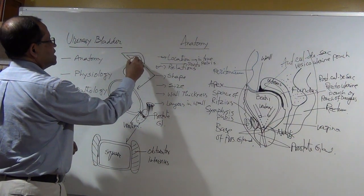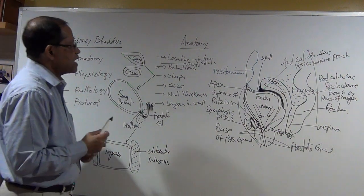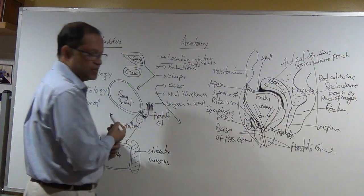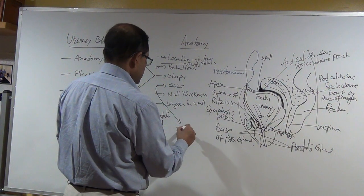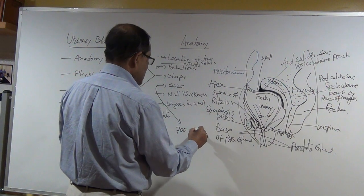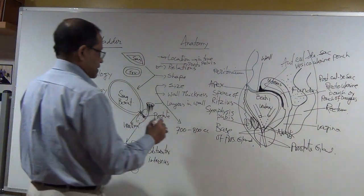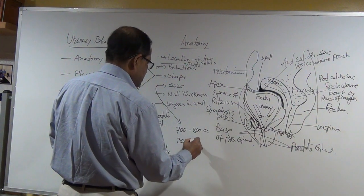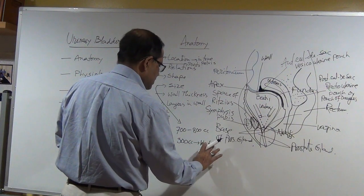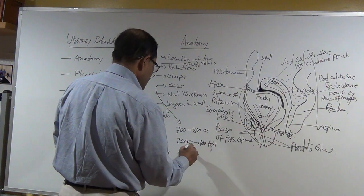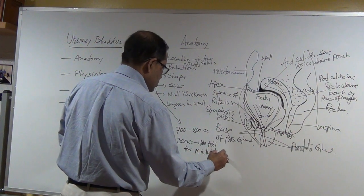The size of the bladder: normally the maximum capacity is 700 to 800 cc when super-distended, but when the bladder reaches about 300 cc we feel the urge to urinate and need to go to the bathroom.